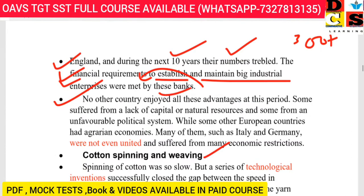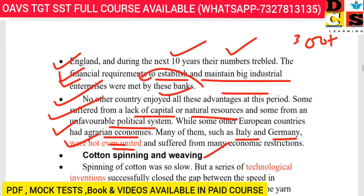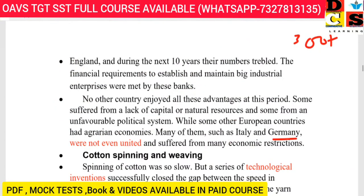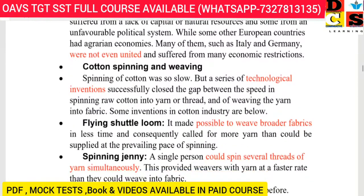No other country enjoyed all these advantages at this period, and that is why Britain started first. Some countries suffered a lack of capital, some had natural resources but lacked a favorable political system, while some European countries like Italy and Germany were not even unified and suffered more economic restrictions. Since Britain had all these benefits combined, it was the first to industrialize.